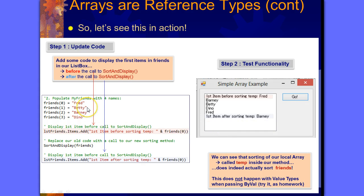Let's populate our list box. First we want to create our array. We're going to add this string as the first element of our list box: 'First item before sorting temp' and friends[0]. This way we're going to see what's in the friends zero position before we do anything, before we apply our method, which we said is going to change things around.